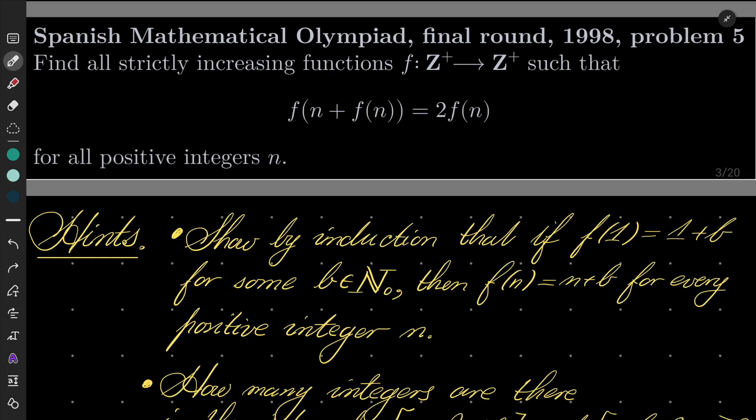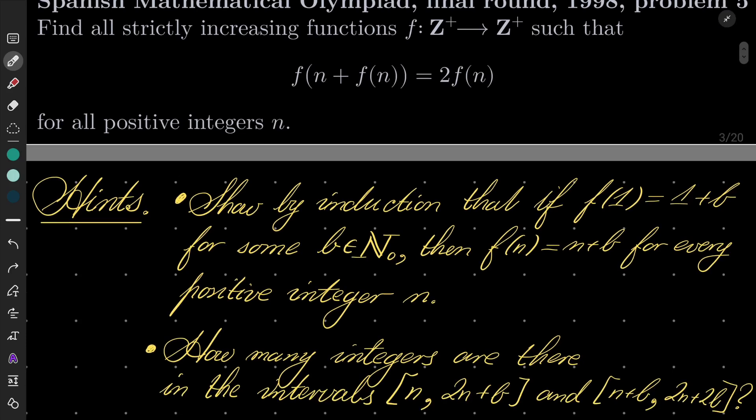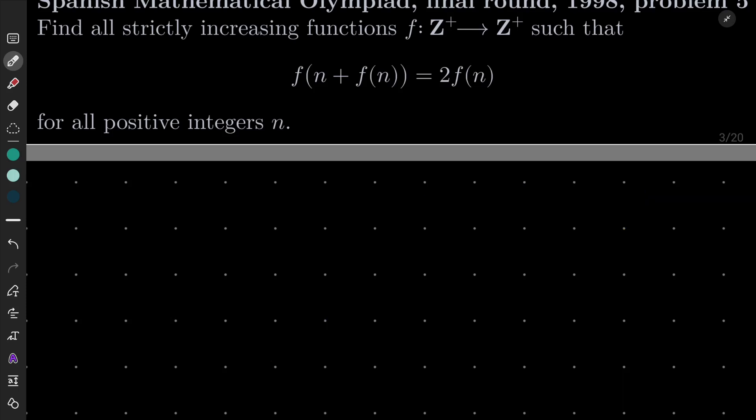Show by induction that f(n) = n + b if b is defined to be f(1) - 1. And moreover, ask yourself, how many integers are there in the interval [n+b, 2n+2b]? So give this problem a try and I will see you in a minute.